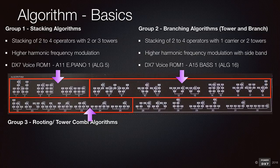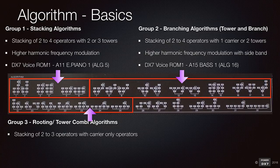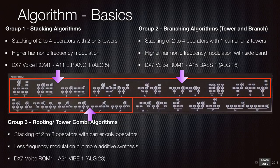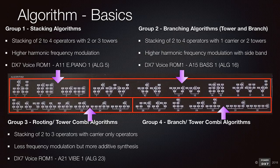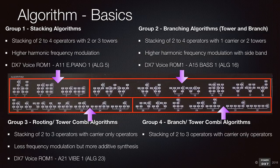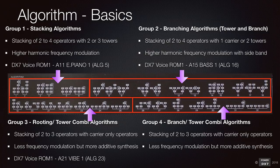The third group is routing and tower combination algorithms. You have two or three operators stacked on top of each other with carrier-only operators in some algorithms. You will start using more additive synthesis in this group, with less frequency modulation. The famous DX7 vibe sound uses algorithm 23. The fourth group is branch and tower combination algorithms. You have two or three operators stacking with more carrier-only operators. Algorithm 32 is a pure additive synthesis algorithm with no frequency modulation. The famous DX7 e-organ uses algorithm 32.